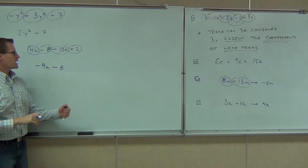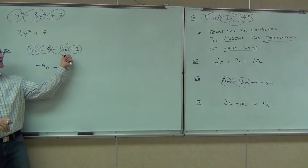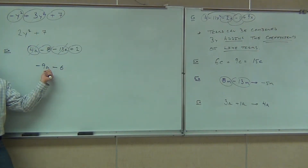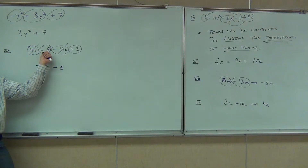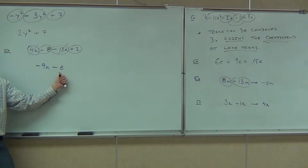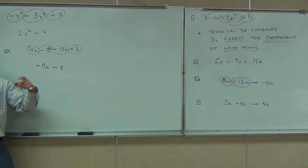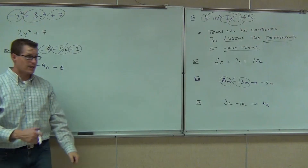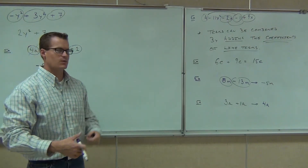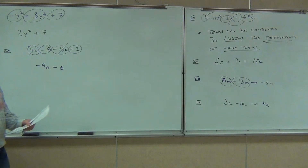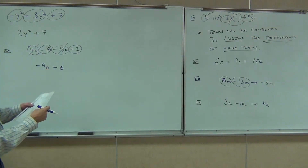Are we okay getting from 4A and negative 13A to negative 9A? Yes. Are we okay getting from negative 8 and positive 2 to negative 6? Remember, that's the addition rule: you subtract 8 minus 2 is 6, sign of the bigger number gives it to you as a negative. Put down minus 6, because that was a negative 6. Okay, one more together, and then you get a few to do on your own.